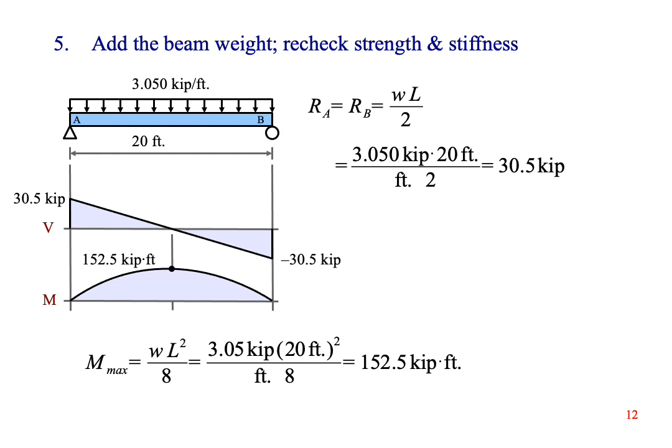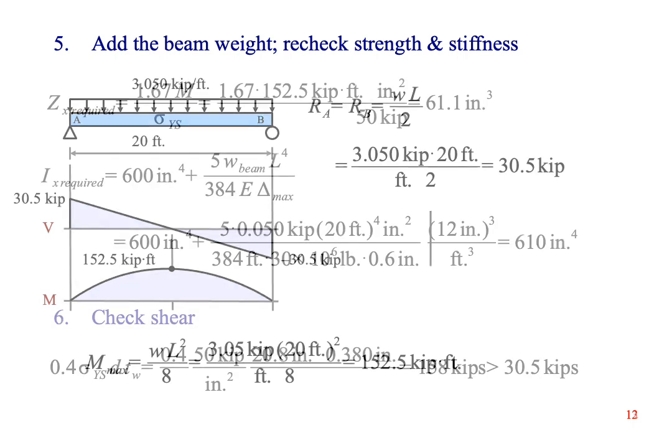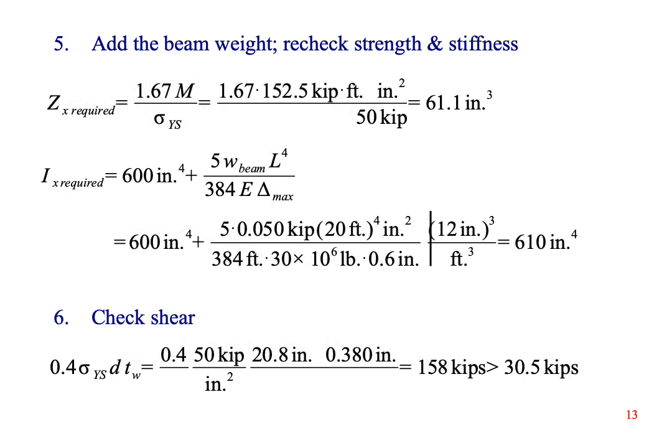Now we add in the weight of the beam and recalculate the reaction forces and the maximum moment. They're a little higher than in example 1 because we're using a heavier beam. The new value of Z is 61.1 inches cubed. We have 110 inches cubed. We only need 61.1 inches cubed. We have more than we need. Therefore, the beam is safe in bending.